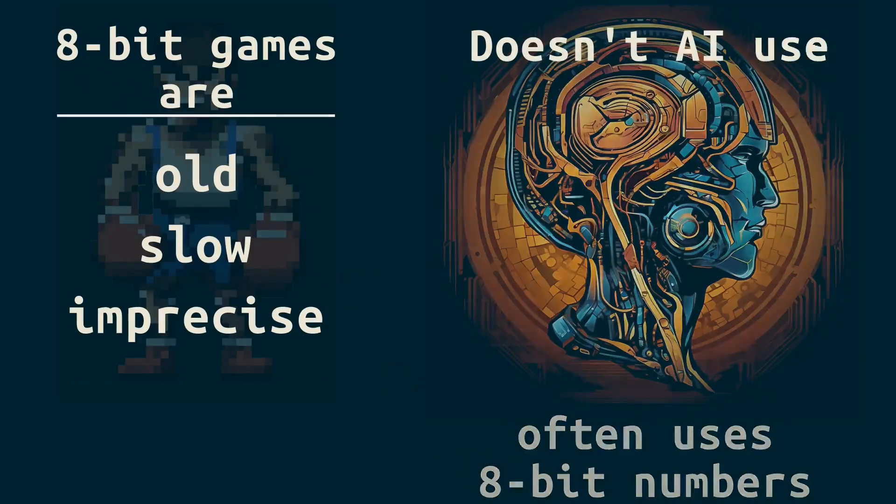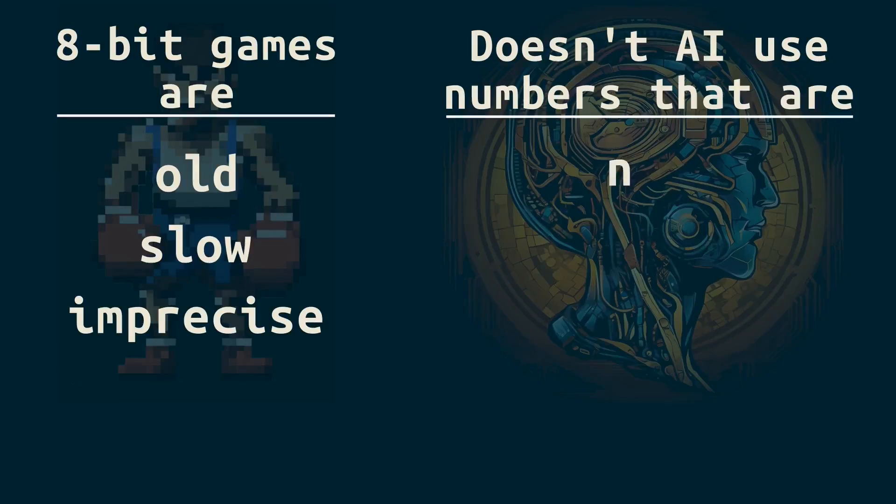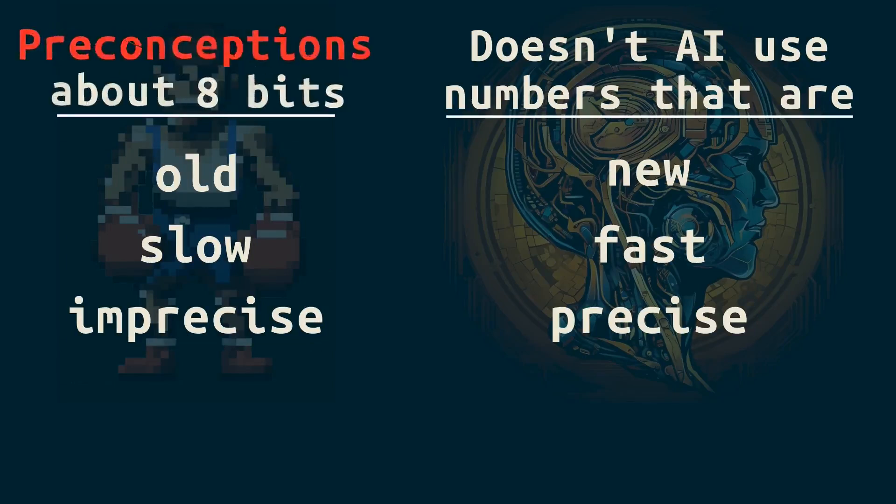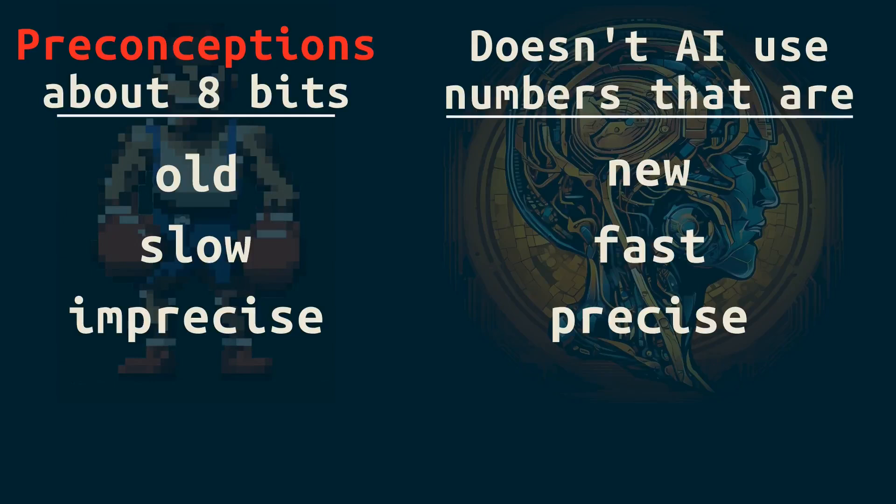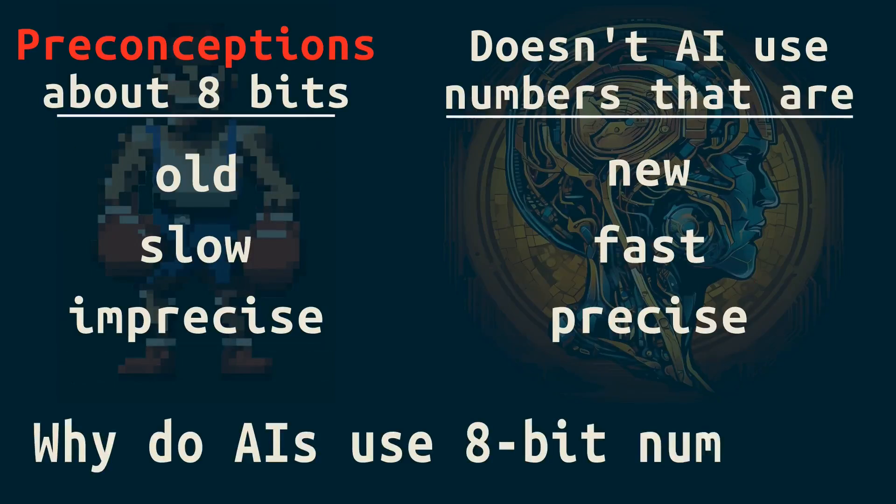So it might surprise you to learn that AI often uses 8-bit numbers. How can that be? Doesn't AI use numbers that are new, fast, and precise? Yes, for two of these three. Whereas here, only one of these three preconceptions about 8-bits is true. Which are true, and why do AIs use 8-bit numbers?